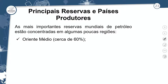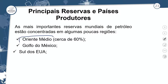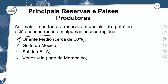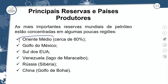Quando se fala das principais reservas, a maior parte do petróleo no mundo — falando de regiões — encontra-se dentro do Oriente Médio. Cerca de 60% das reservas do mundo estão localizadas no Oriente Médio. Também encontro petróleo no Golfo do México, no sul dos Estados Unidos, na Venezuela, na Rússia e na China. São as principais áreas produtoras. No Brasil também se encontra petróleo, mas estamos falando das principais reservas produtoras do mundo.